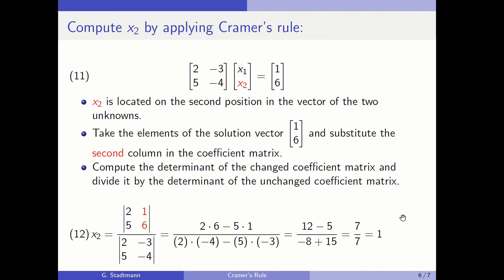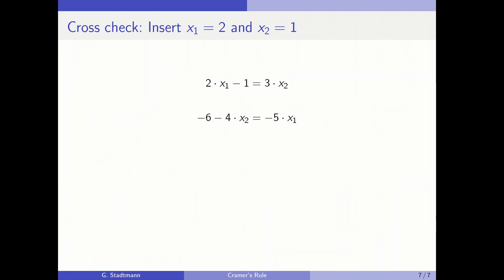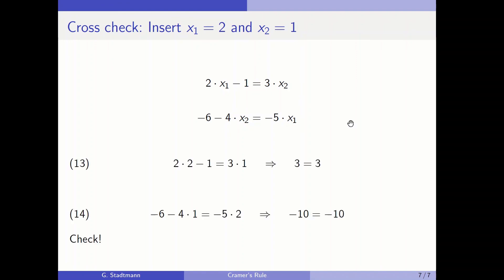Now we can cross check whether x1 is really equal to 2 and x2 is really equal to 1. We insert x1 equals 2 and x2 equals 1 into the equations and check that the equal sign holds. For equation 1: 2 times 2 minus 1 should equal 3 times 1, giving 3 on the left hand side and 3 on the right hand side — check.